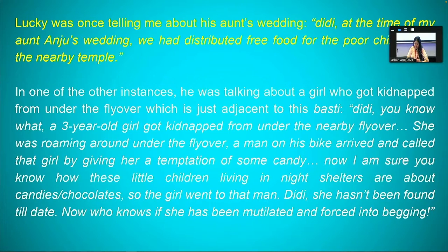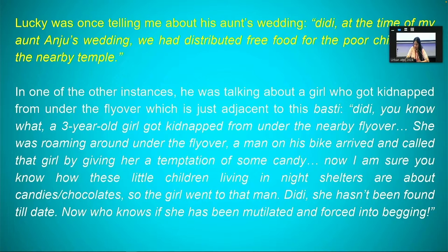I'll share a few instances from fieldwork. In one instance, Lucky was talking about a girl who got kidnapped from under the flyover adjacent to the basti. His narration showed an attempt to distance himself from the images of Garib or Rein Basereke Bachche — bodies which closely constitute his own social world too.